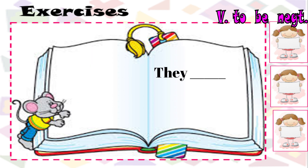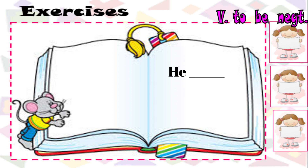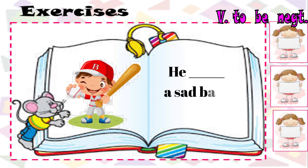They — yellow stars. Aren't, am not, or isn't? Which one is correct? Look at the picture. He — a happy baby. Aren't, am not, or isn't? Which one is right?